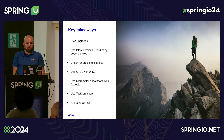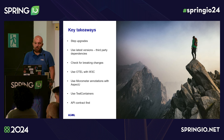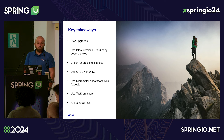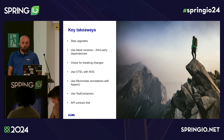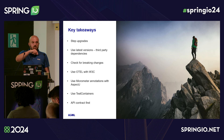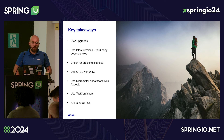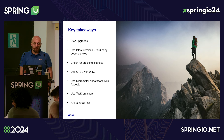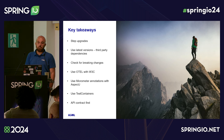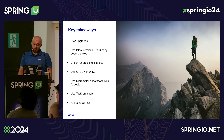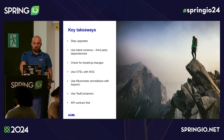Key takeaways: do step upgrades if you have a migration to deal with — don't skip intermediate versions. Use the latest versions of third-party dependencies and check for breaking changes upfront. I recommend using OTEL with W3C propagation, and explore the full OTEL ecosystem including the OTEL collector and where your tracing and metrics data is stored. Use Micrometer annotations with AspectJ — they are out of the box. Strongly recommend using test containers, and explore the API contract-first approach: define the OpenAPI spec and automatically generate server and client code.